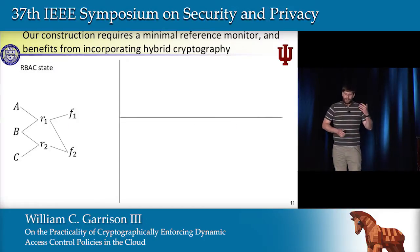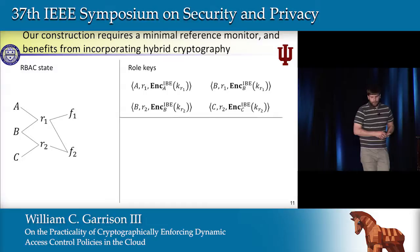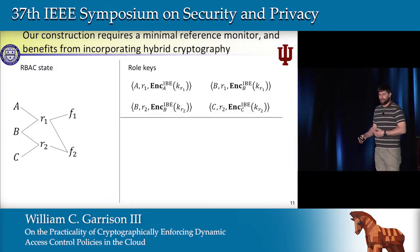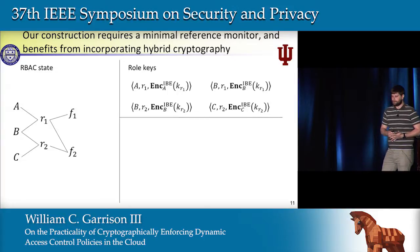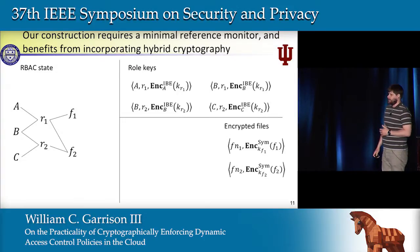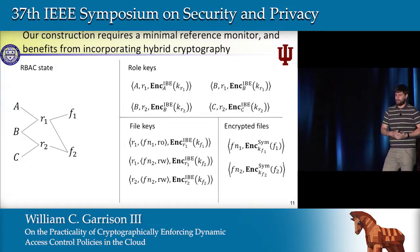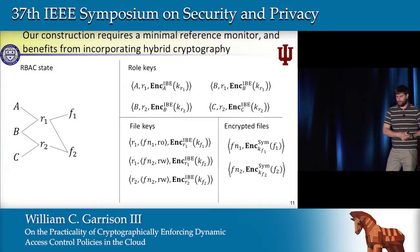The first thing is I'm going to bring back the role keys that we had before, and look at adjustments we can make to the storage of files to enable users to write to those files. The first thing is that we're going to use hybrid cryptography. We're going to encrypt the files with a random symmetric key and then use IBE to encrypt those symmetric keys to the roles that should have access to them.